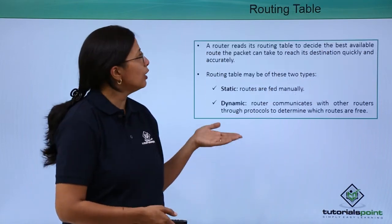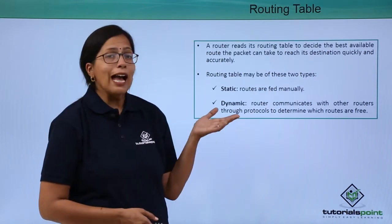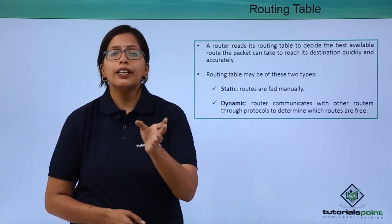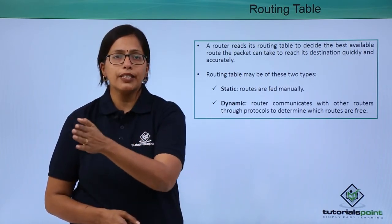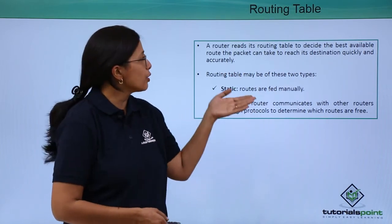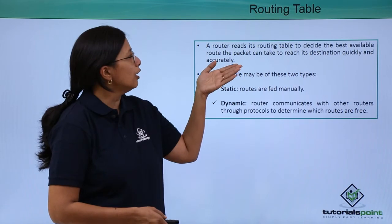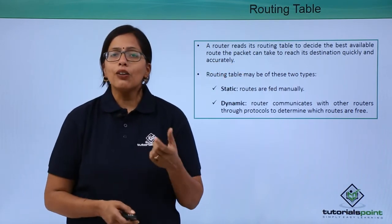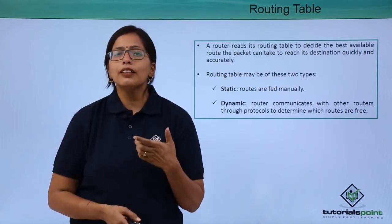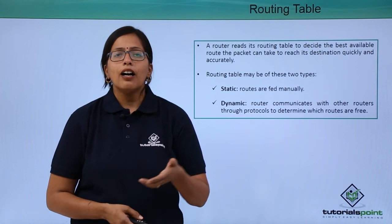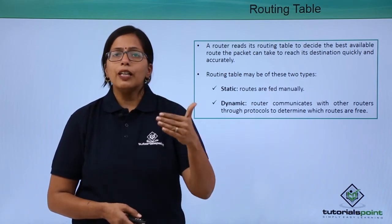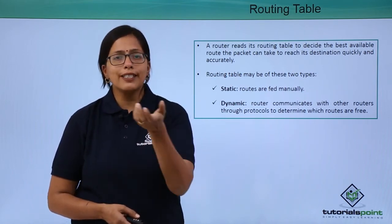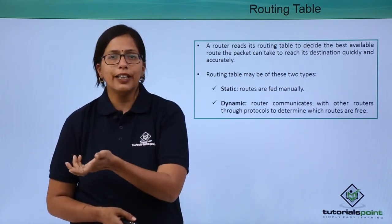Now let's see how the router actually decides how the data packet will be sent. It does so using a routing table. A routing table is nothing but a list of available systems that will accept the data packet.